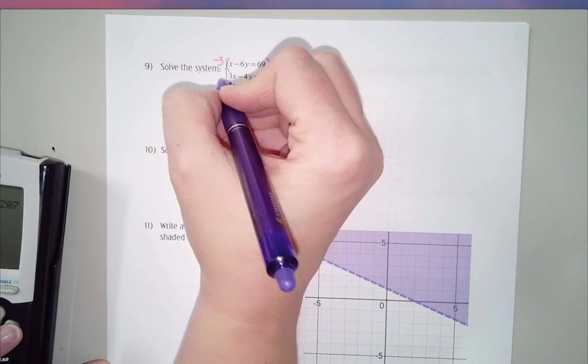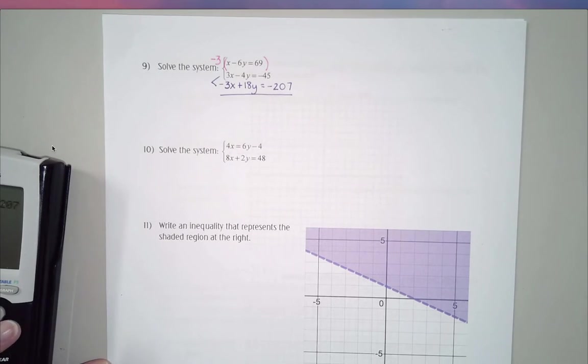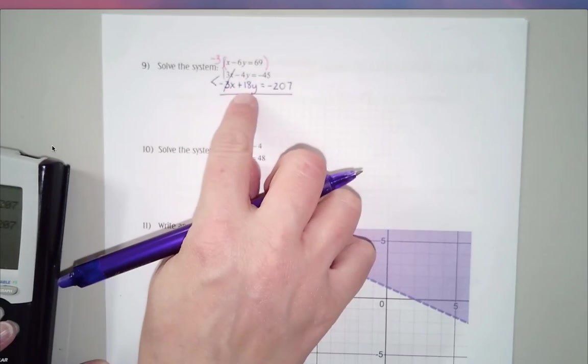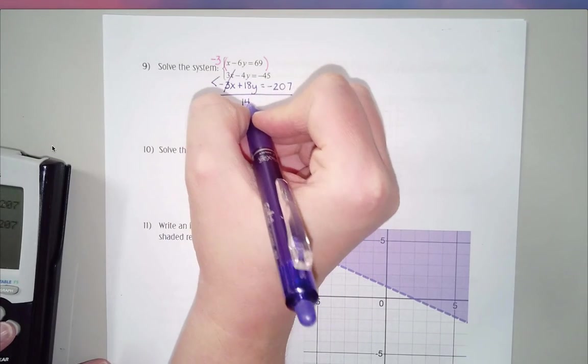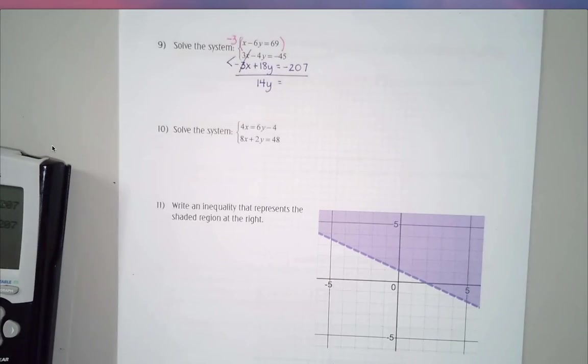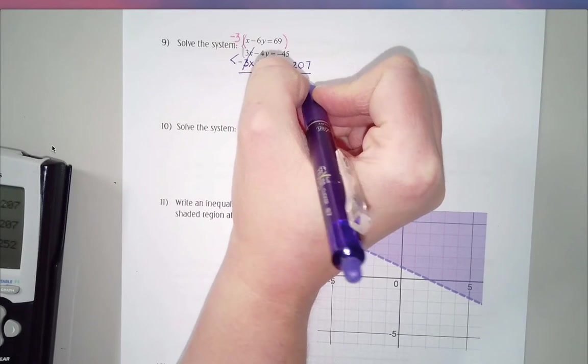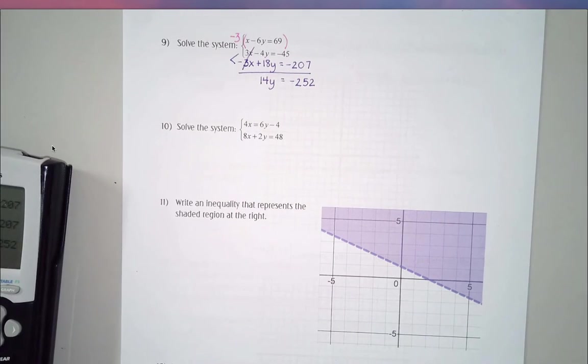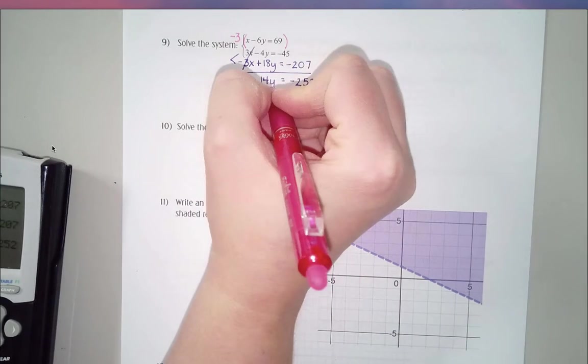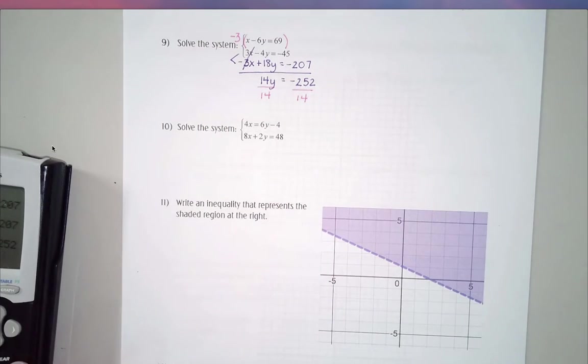Now I'm adding these two equations together with the goal of canceling out either the x's or the y's. So you'll notice that in this case, the x's cancel. Negative 4 plus 18 gives me 14y. And then negative 45 plus negative 207 gives me negative 252.